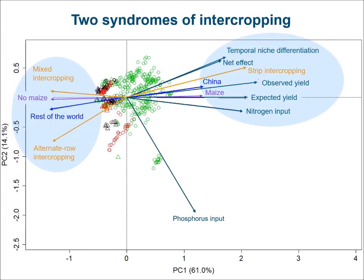In the PCA results we found two syndromes of intercropping, meaning that management factors often occur together. For instance, a high net effect associates with temporal niche differentiation, strip intercropping, high yield, and high nitrogen input. This high net effect applies to intercrops with maize in strips practiced in China. On the other hand, a low net effect associates with intercrops without maize, which are mixed or alternate row intercropping practiced outside China.